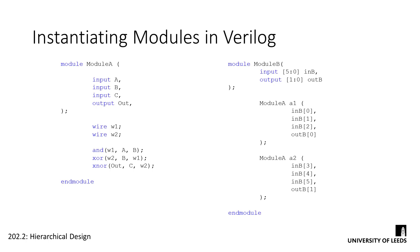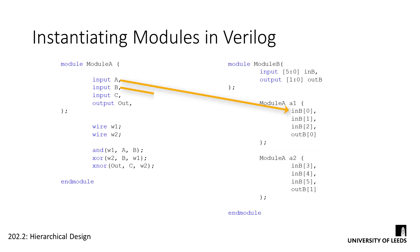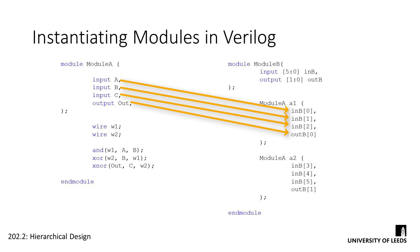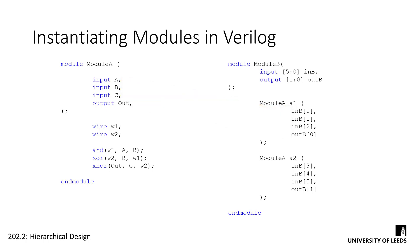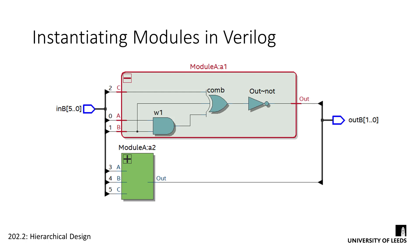In Verilog, we can implement hierarchical design by instantiating sub-modules within our modules. We design everything from the bottom up, meaning that you can't instantiate a module that does not yet exist — it needs to be created first. In the example here, module A will become our sub-module, so it will have already been designed, tested, and verified as fit for purpose. We can instantiate module A in module B using the format you can see here. It's similar to calling a function in C++, except instead of passing parameters, we're wiring up ports between the modules. We connect these ports in the order that they appear in the sub-module's interface, so we need to pay close attention to what each does and where it's going. Once this system has been compiled, we can see in the RTL that our top-level module, module B, instantiates two instances of module A, and we can expand to see the gate-level RTL of the sub-modules.